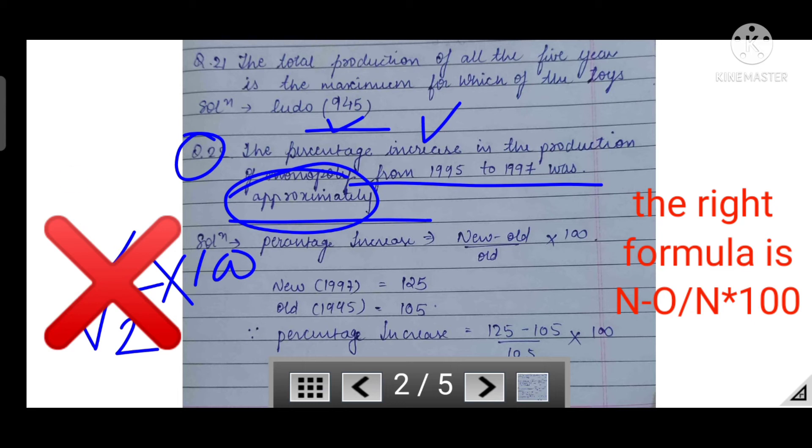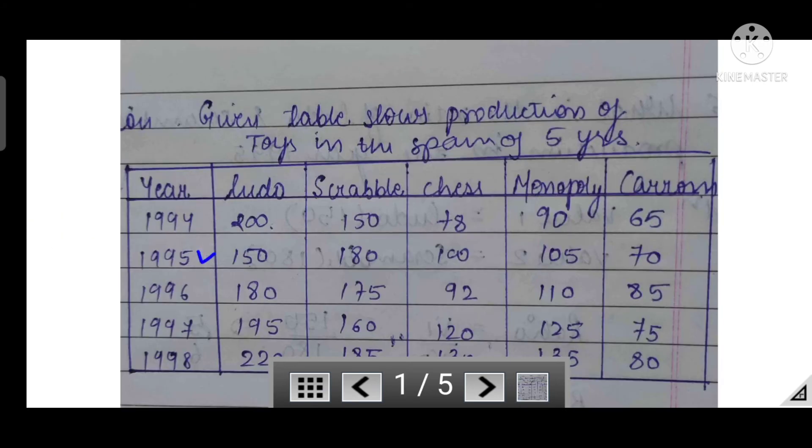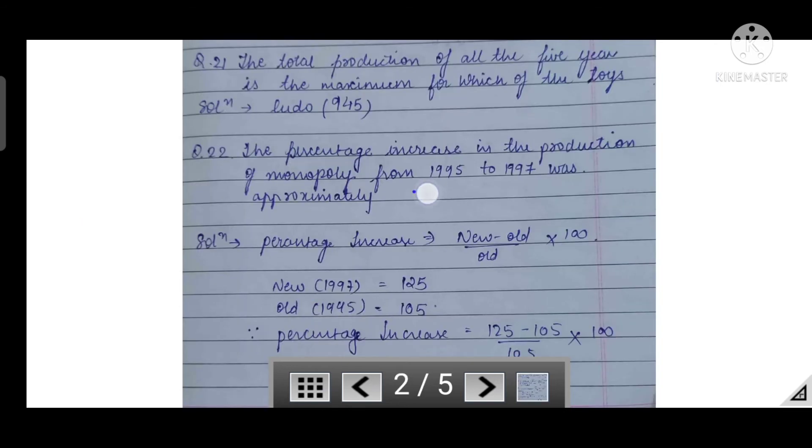The second question: the percentage increase in production of Monopoly from 1995 to 1997 was approximately. Here are two important terms to observe: first, percentage increase, so we will use the percentage change formula. Second, it says approximately, meaning we won't get absolute data. In the question, 1995 and 1997 Monopoly figures: which is the latest? 1997.